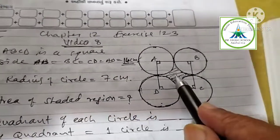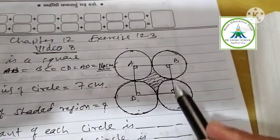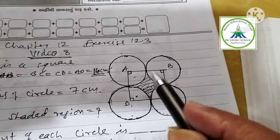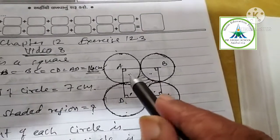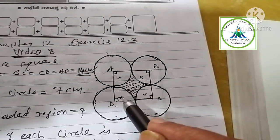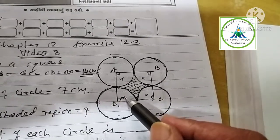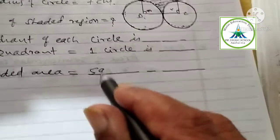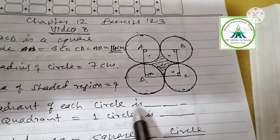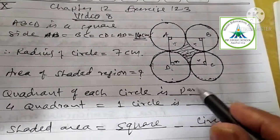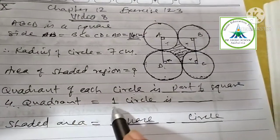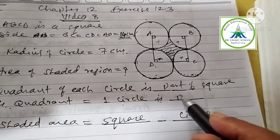In this figure, these four circles are touching each other, means this quadrant of each circle is part of square. Quadrant of each circle is part of square, means there are four quadrants. And four quadrants equal to one circle. So one circle is part of the square.